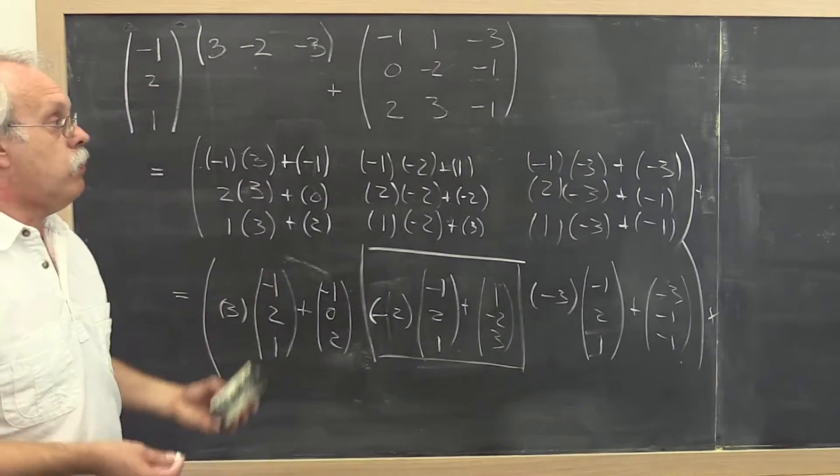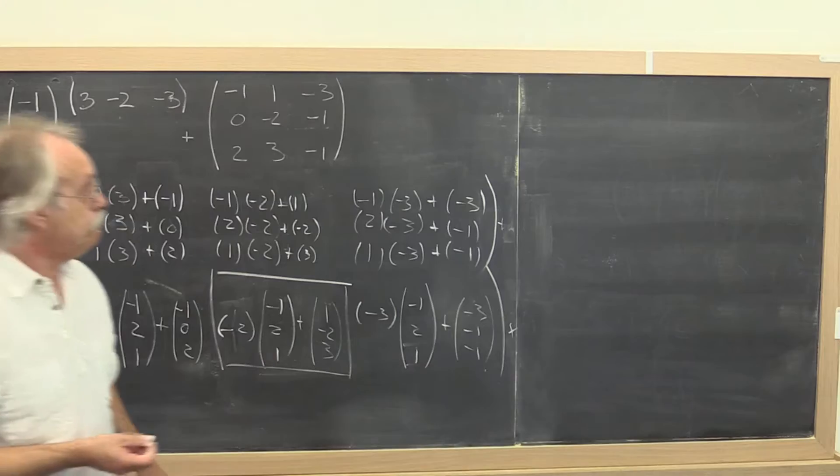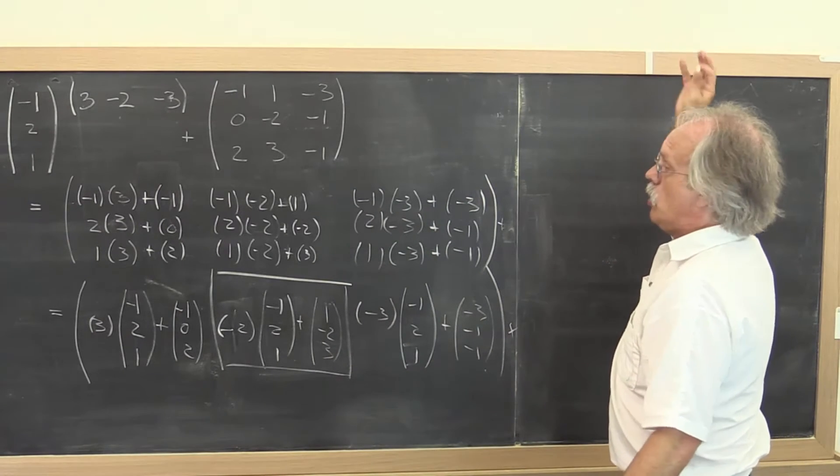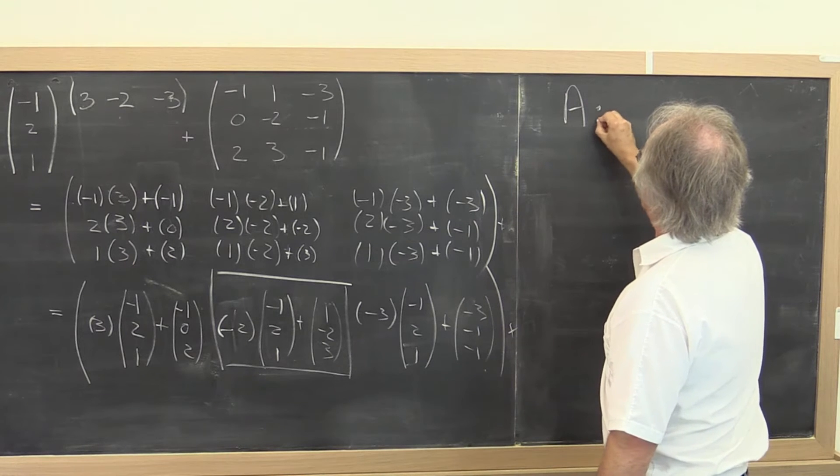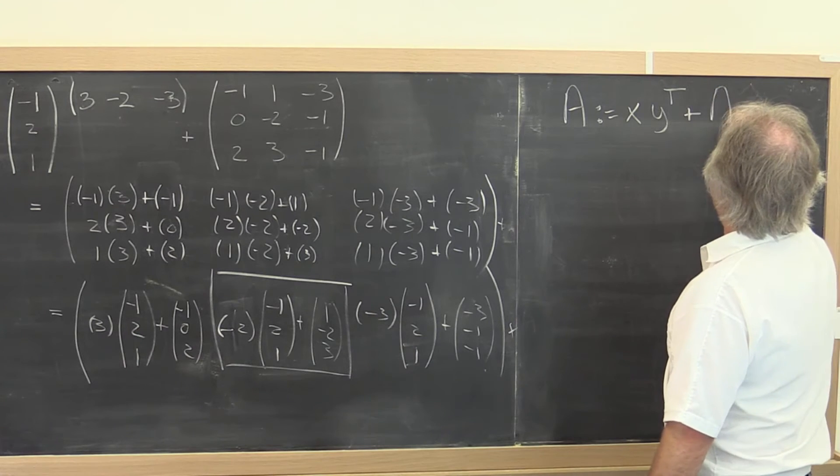So how do we now come up with a partitioned matrix expression for this? What do we have? We want to do A becomes xy transpose plus A.